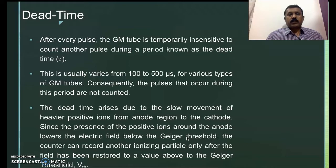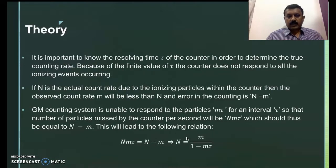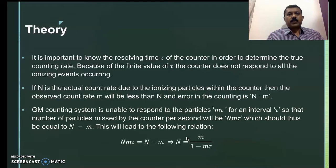If the voltage is below the Geiger threshold, then the GM counter becomes insensitive — it will not count. We have to wait till there is re-establishment of this threshold voltage. This time duration during which there is a decrease and then re-development of the threshold voltage is referred to as dead time of the GM counter. If the dead time is less, then the counter is more sensitive, and vice versa.